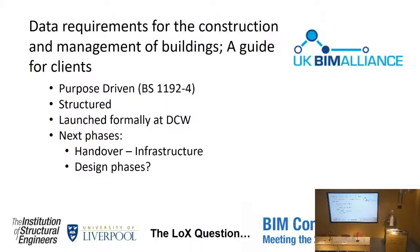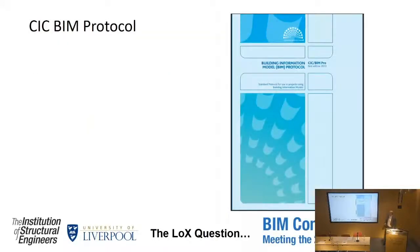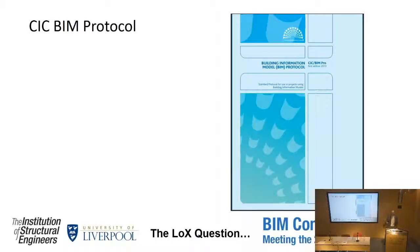What information do clients need at different gateways throughout the design process to enable them to move forward? There's also the CIC BIM Protocol. How many people doing a BIM project have a contractual deliverable or BIM protocol in place? About five or six have BIM as a contractual deliverable, and three of those have some sort of BIM protocol in place. So people are asking for Level 2 BIM as a deliverable, but far fewer are actually protected by what's in the BIM protocol.